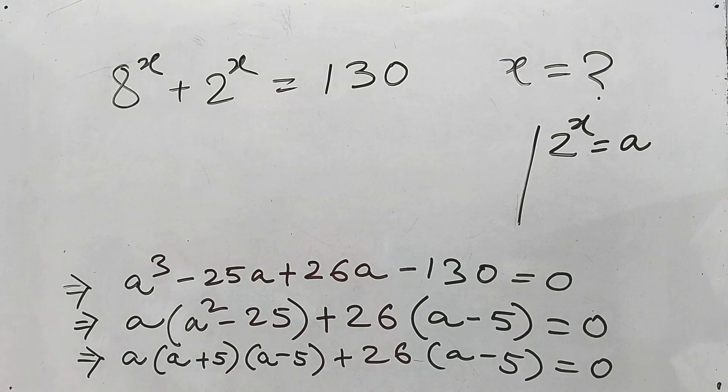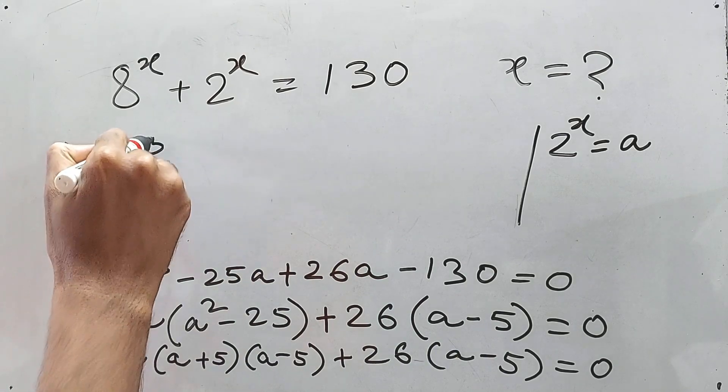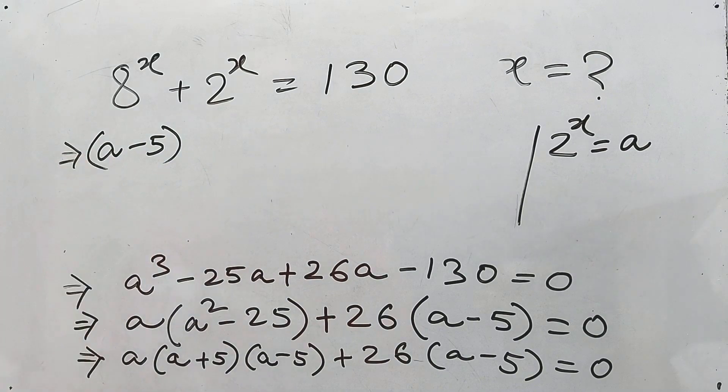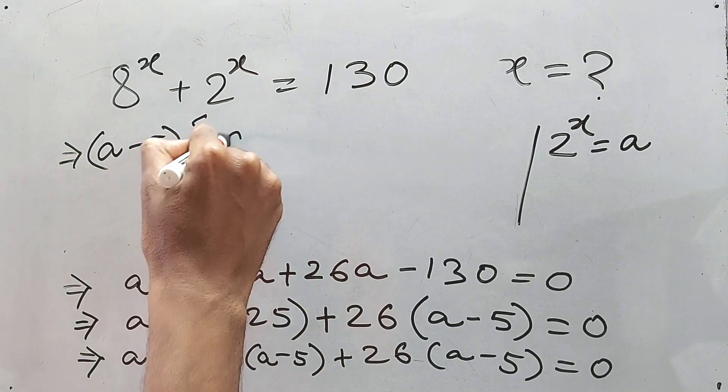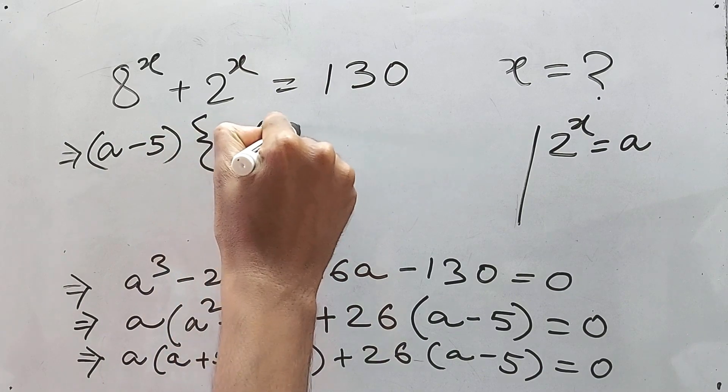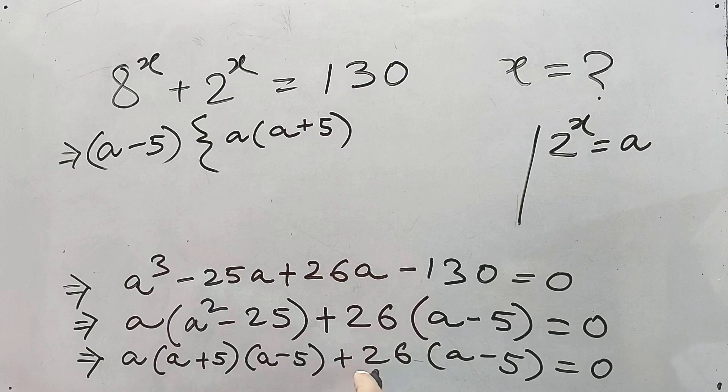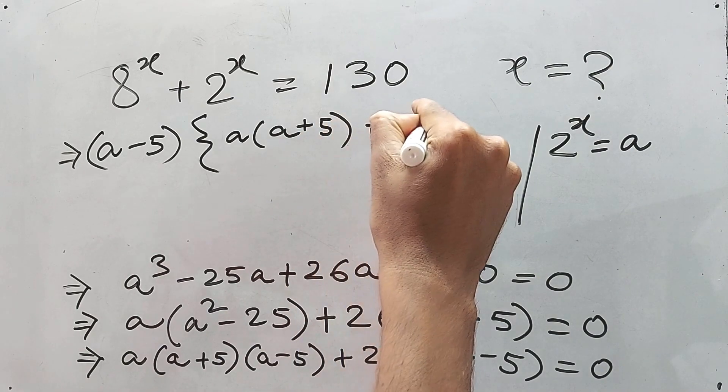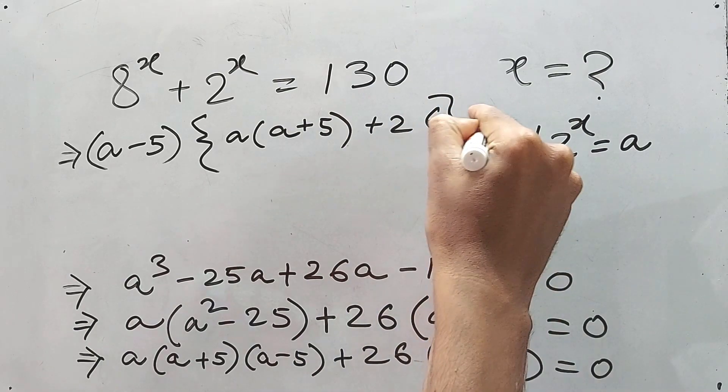Clear, right? Now a minus 5 is common for both the terms, so definitely we can write a minus 5 here, a minus 5 here, and from the left side a into a plus 5, and on the right side, I mean for this term only, 26. We can write a minus 5, right, is equal to 0. Clear.